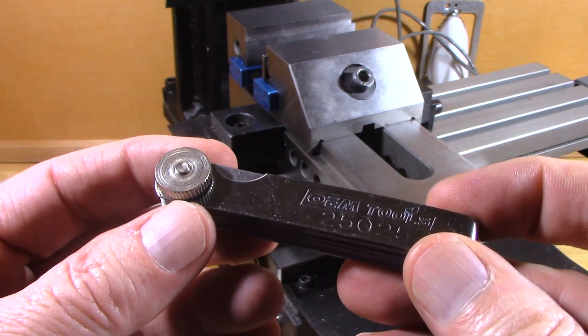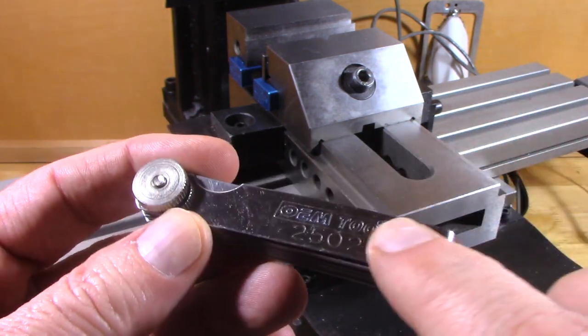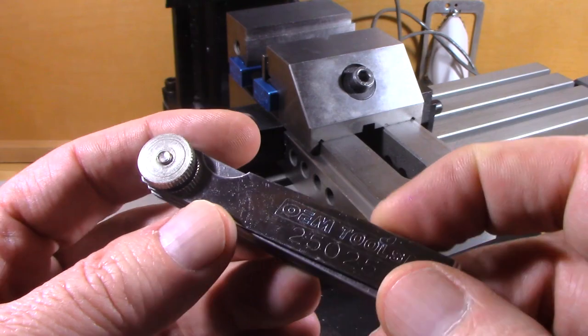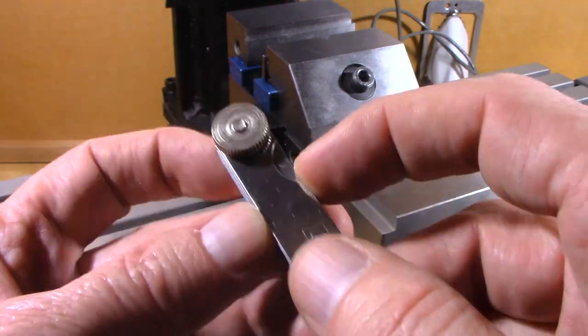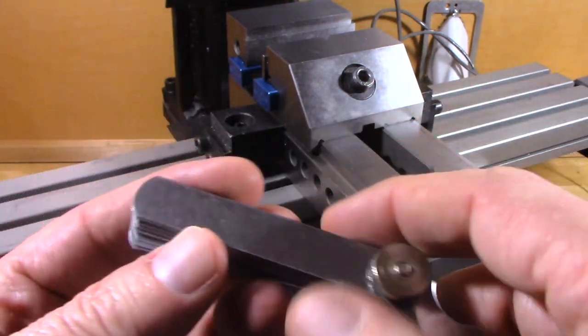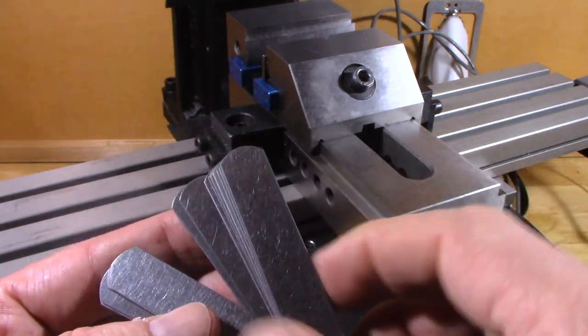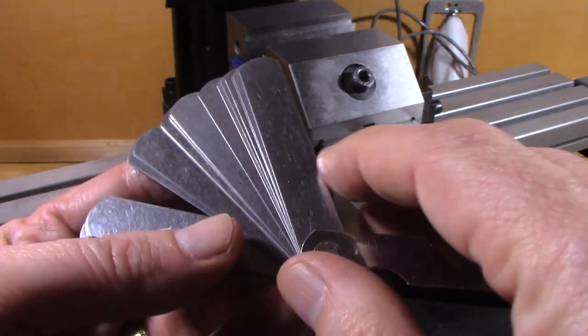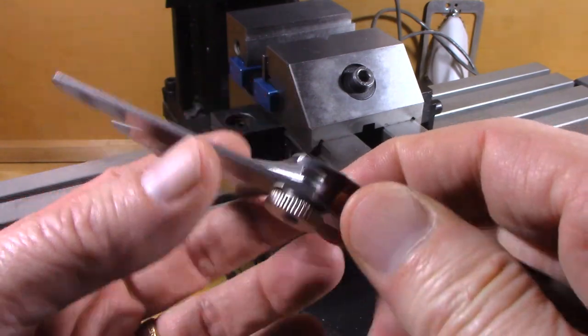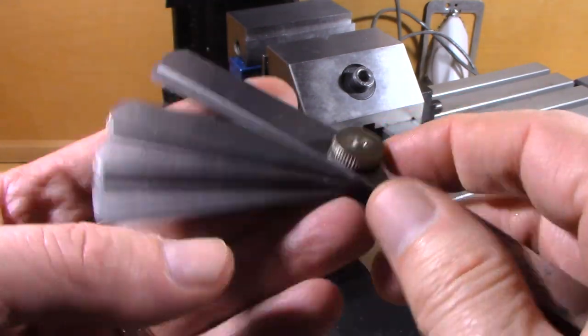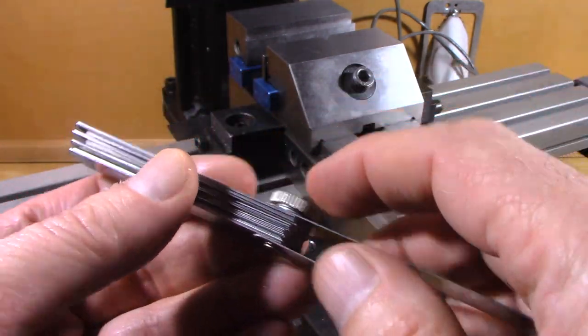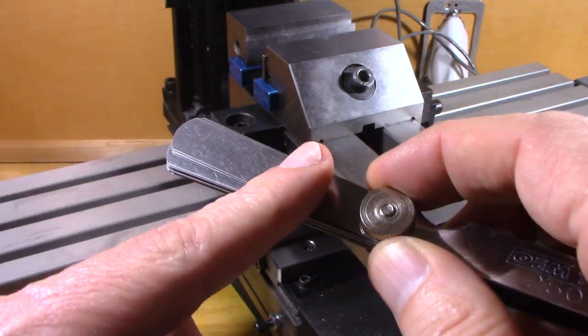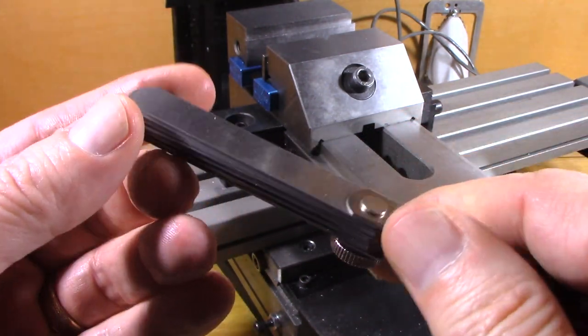This is the feeler gauge set that I was using. I believe I got this from Harbor Freight, but I'll put a link down below. I may have gotten it from Amazon. The nice thing about this feeler gauge set is that they're fairly short so they fit well underneath the different places where they need to go, and it has this thumb screw so you can remove the screw and then just remove the individual feeler gauges and use them as shims.